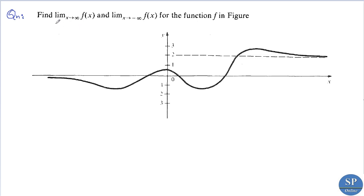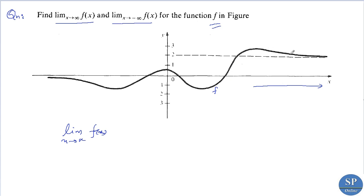Find limit x tends to infinity f of x and limit x tends to minus infinity f of x for the function f shown in this figure. As x approaches to infinity we can see that the graph of this function approaches to 2, so limit x tends to infinity f of x is 2. And as x approaches to minus infinity the graph approaches to the line y equal to 0, that is f of x approaches to 0.